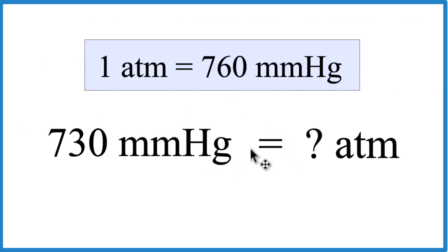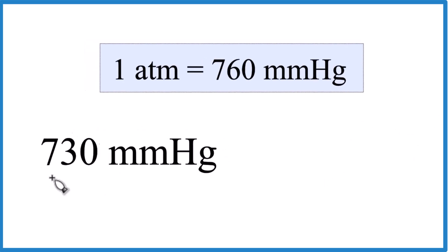We want to get atmospheres as our final answer. Here's how we do that. We're going to multiply the 730 millimeters of mercury times a conversion factor. Since we want the millimeters of mercury to cancel out, we need to have that on the bottom.